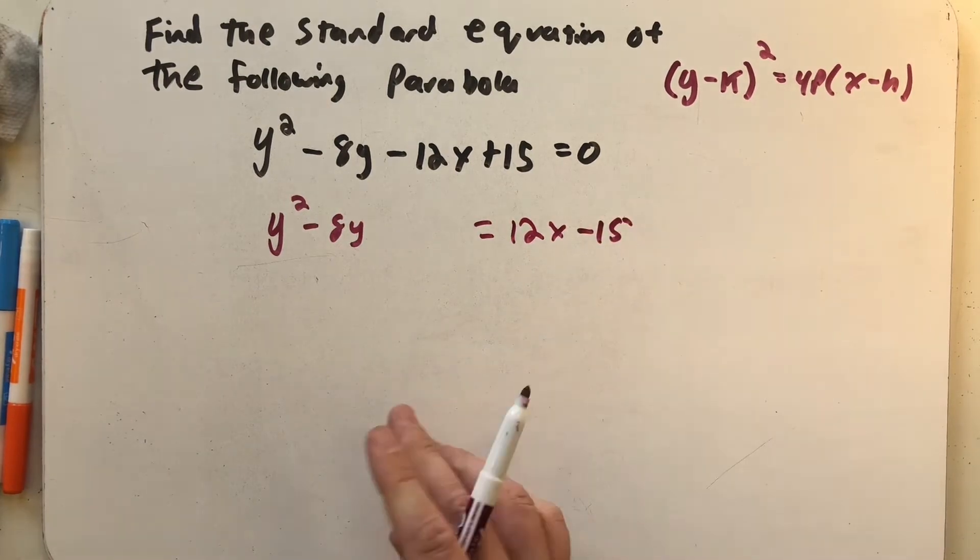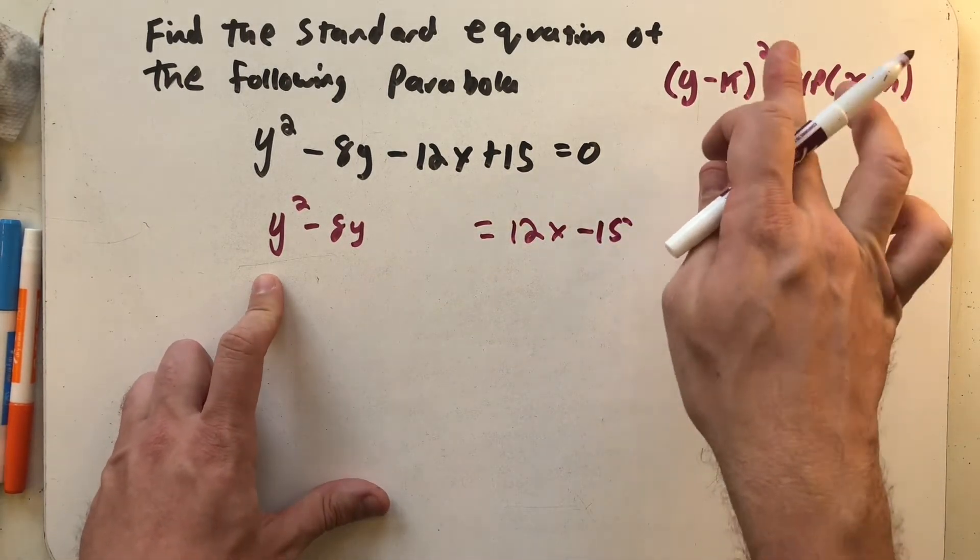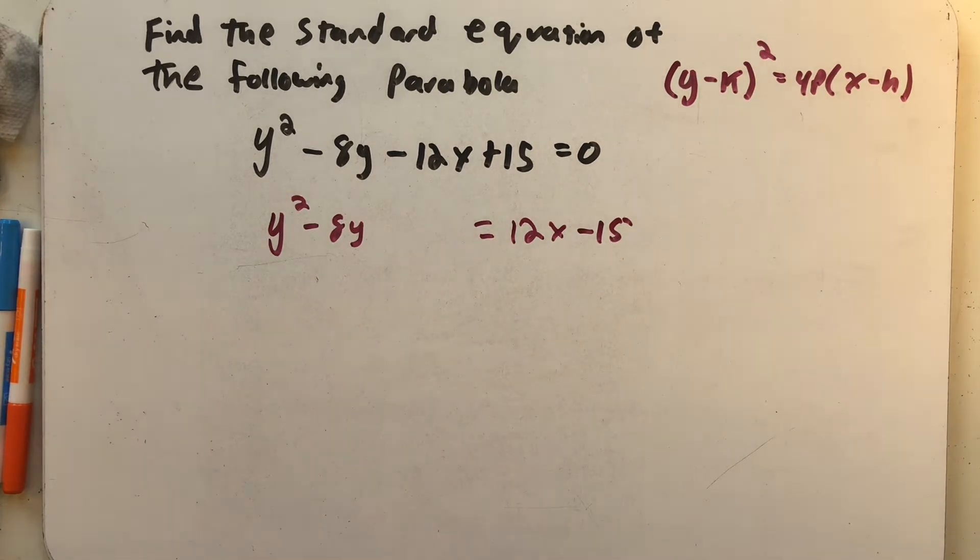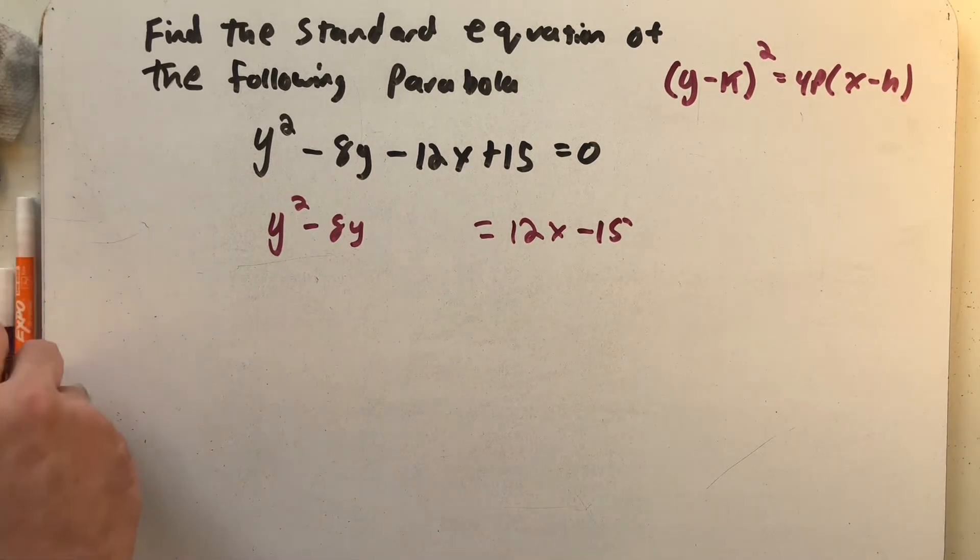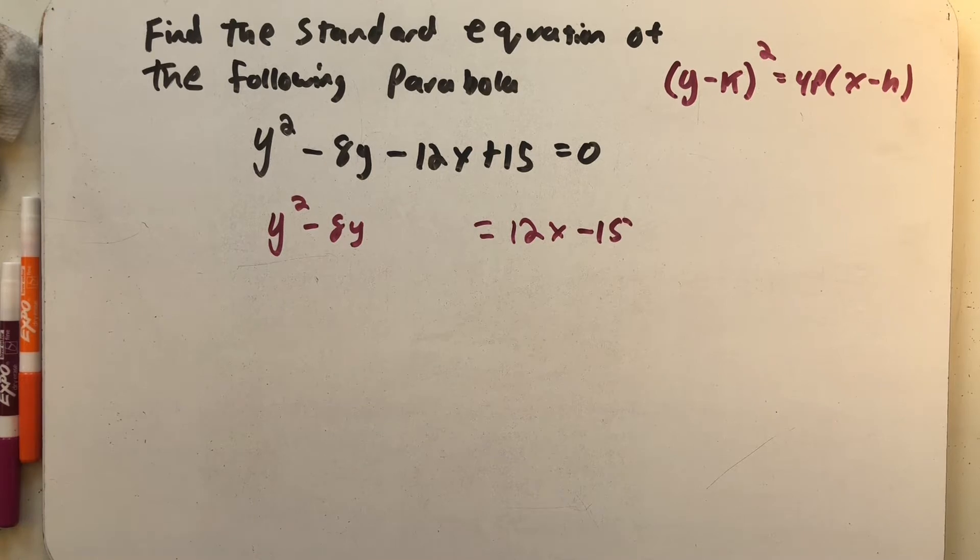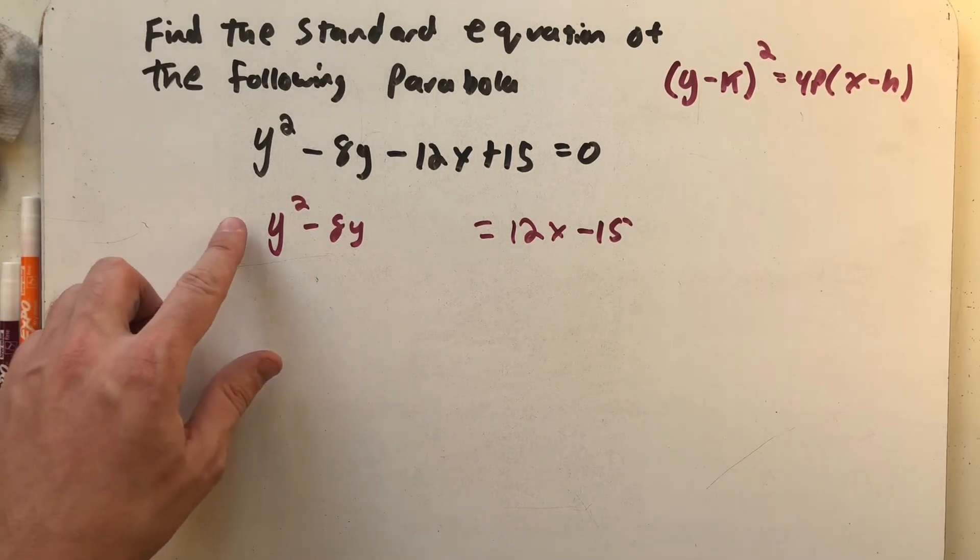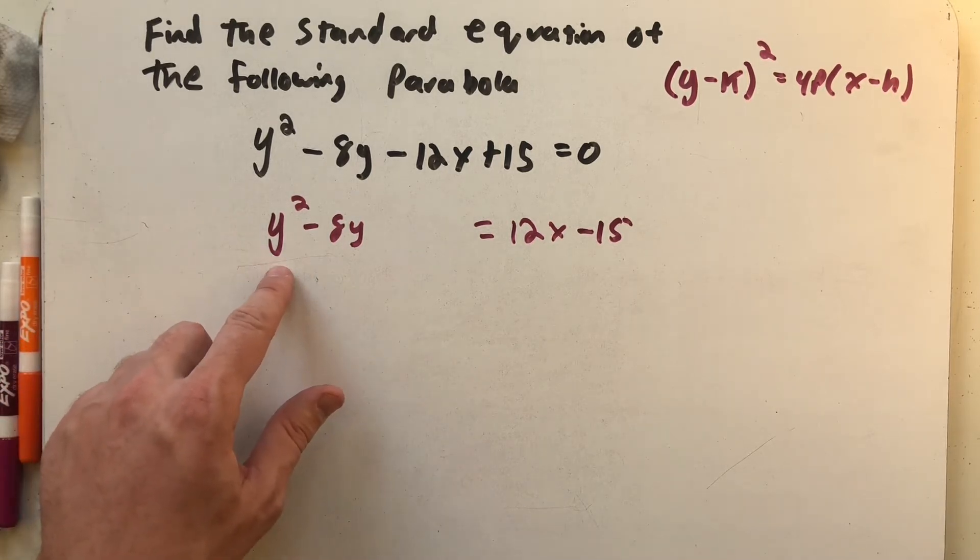And now what I see that I need to do is I need to have a y minus something squared. I need to complete the square. So here's another moment in mathematics where completing the square is an incredibly useful tool. I look at my quadratic that's in the form of 1 times the square term.